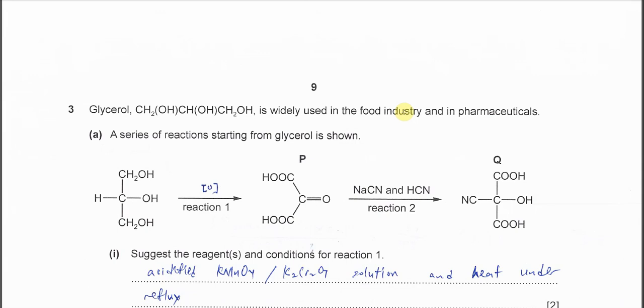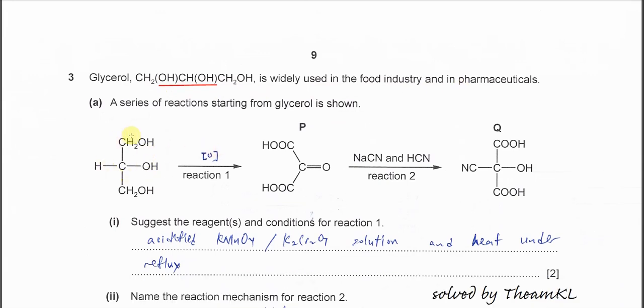Question 3. Glycerol is a triol which is used in the food industry and pharmaceuticals. So this is the structure of the glycerol. It undergoes reaction 1 to form P, after that reaction 2 to form Q.